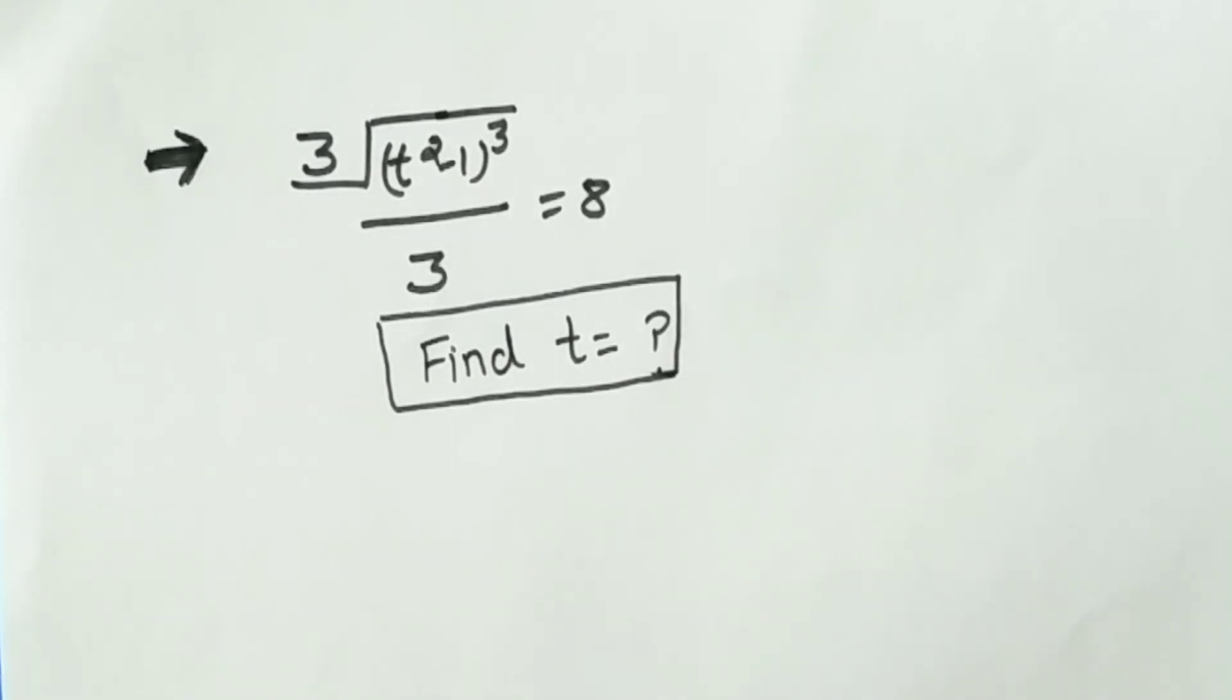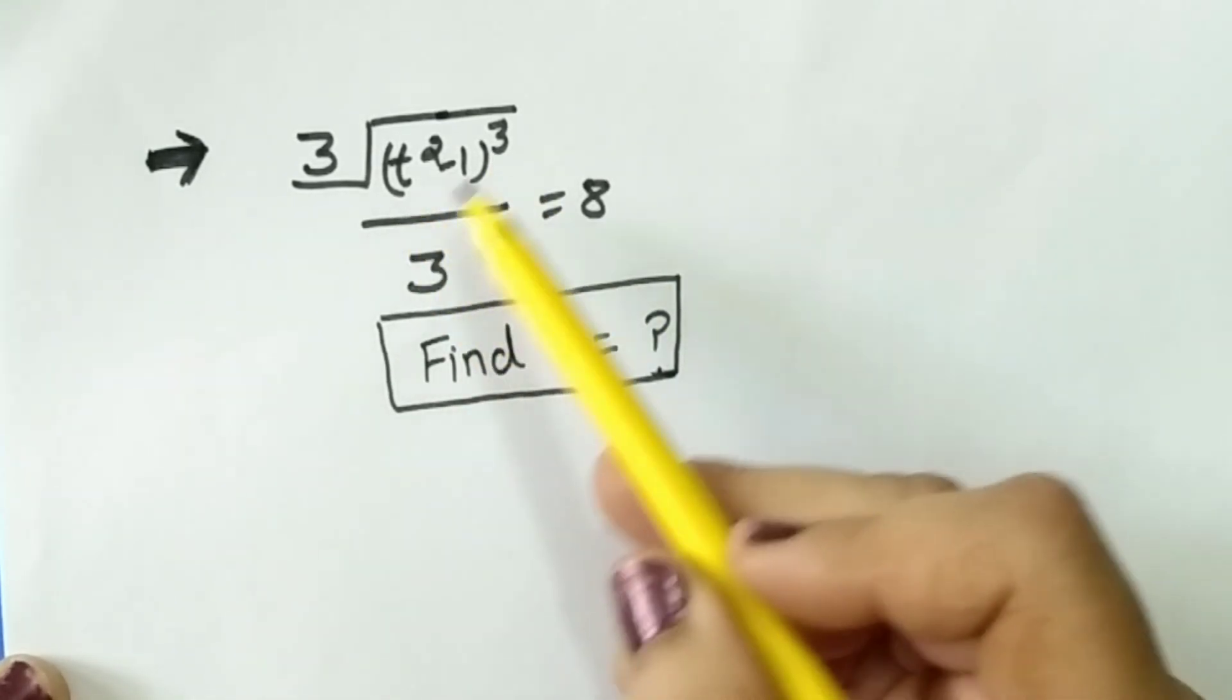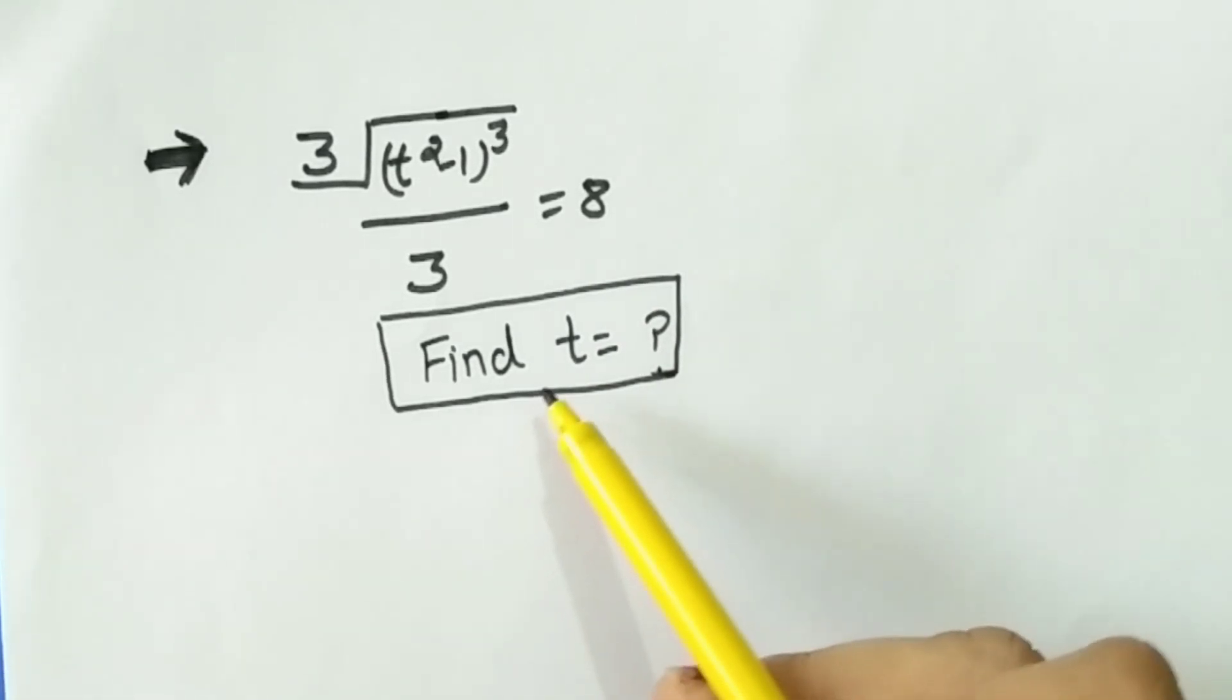Welcome once again to my YouTube channel. In this video we solve this question here: the cube root of (t² - 1) raised to power 3 upon 3 equals 8. Here we find the value of t.